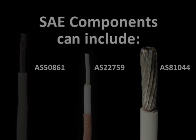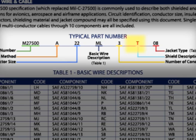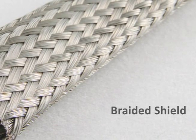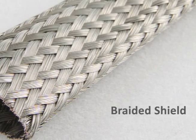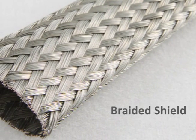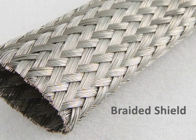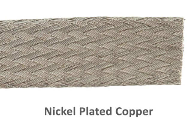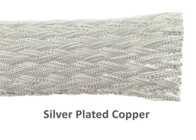Shielding is optional and is represented by a single-letter code in the part number. If the cable has a shield, it must be a closely woven braid with round or flat strands. Braids are available in a range of materials, including tinned, nickel-plated and silver-plated copper, stainless steel, and more.